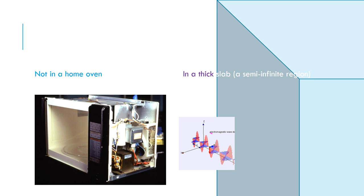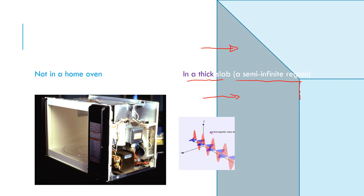We are not talking about electromagnetics inside a home microwave oven — that is way too complex to get started. The simple situation we want to consider is not a thin or finite slab but a very thick slab, also called a semi-infinite region, meaning there is a surface but no other end — it's infinitely thick. In that infinitely thick region we consider electromagnetic waves incident this way.